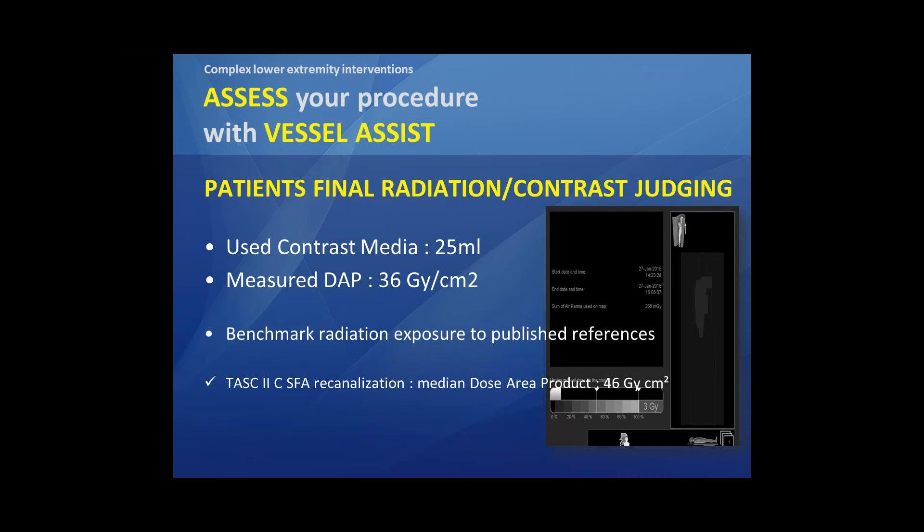At the end, we always look at our used contrast media. Here, in difficult SFA occlusions, we use around 25 milliliters of contrast medium. It's also important to look at the measured DAP — which in this case is 36 Gray per square centimeter. It can be interesting to benchmark your radiation exposure to published references. For instance, looking at difficult TASC C and D lesion treatment, the median dose area product found is around 46 Gray per square centimeter — so there is an important reduction in terms of DAP.